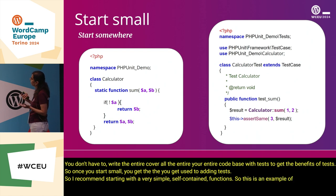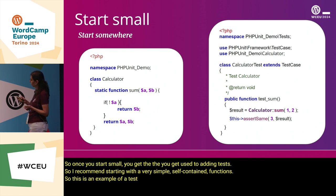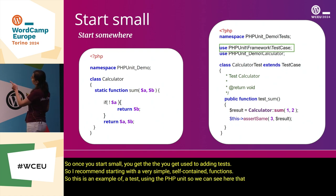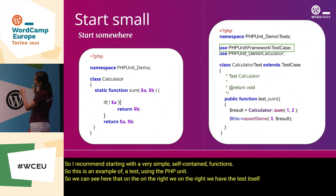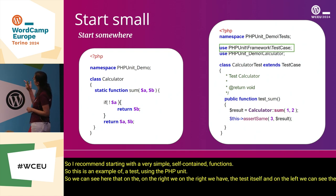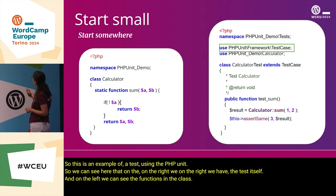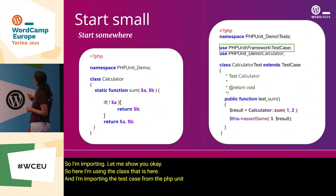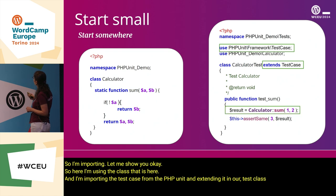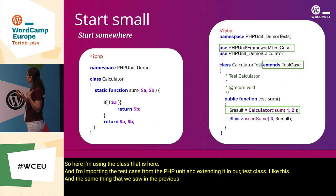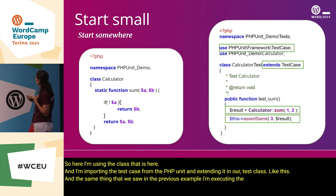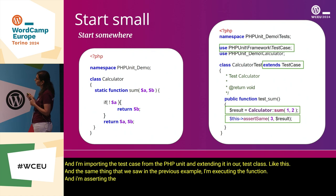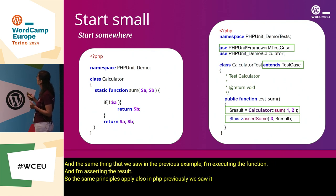This is an example of a test using PHPUnit. On the right we have the test itself, and on the left we can see the functions in the class. I'm importing the test case from PHPUnit and extending it in our test class. The same thing we saw in the previous example: I'm executing the function and asserting the result. The same principles apply in PHP as we previously saw in JavaScript.